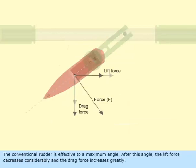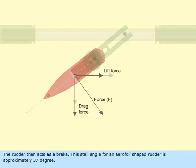The conventional rudder is effective to a maximum angle. After this angle, the lift force decreases considerably and the drag force increases greatly. The rudder then acts as a brake. This stall angle for an aerofoil-shaped rudder is approximately 37 degrees.